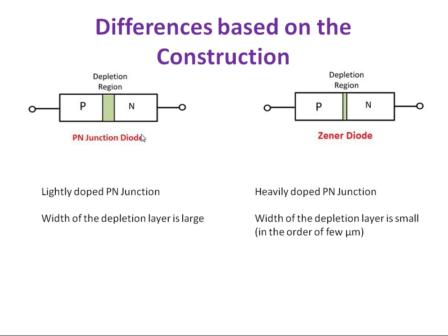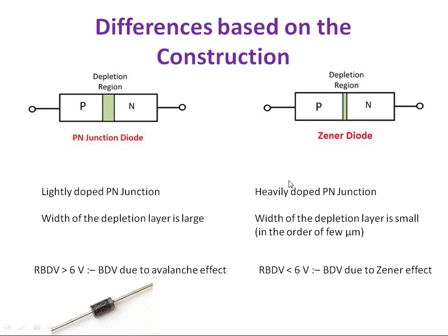This RBDV means reverse breakdown voltage is greater than 6V for PN Junction Diode. It is BDV, breakdown due to avalanche effect. But here that RBDV is less than 6V and BDV due to Zener effect. That is a major difference. Normally the width of the depletion layer is inversely proportional to doping.